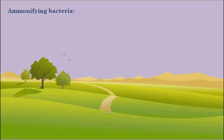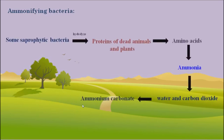The second category of bacteria is ammonifying bacteria. Some saprophytic bacteria hydrolyze the protein of dead animals and plants into amino acids. Some ammonifying bacteria then convert the amino acids into ammonia, which further combines with water and carbon dioxide to form ammonium carbonate. That ammonium carbonate is used by many plants as a nitrogen source.